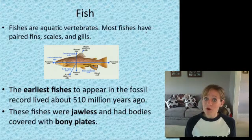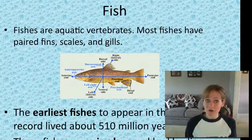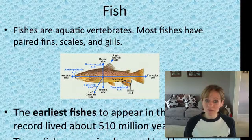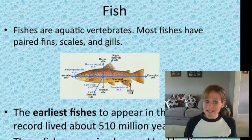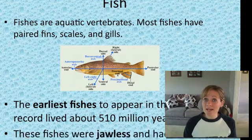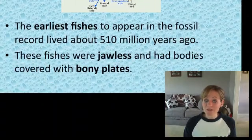Fish are aquatic — I'm sure you already knew that. Most fish have paired fins, scales, and gills. The earliest fish appeared 510 million years ago in the fossil record, and these fish were jawless.